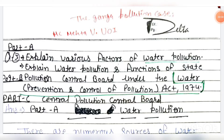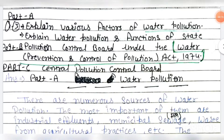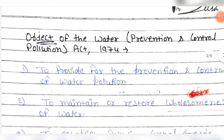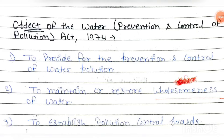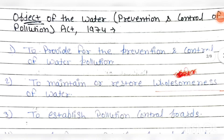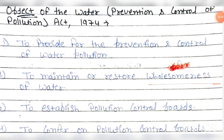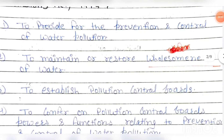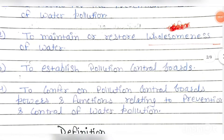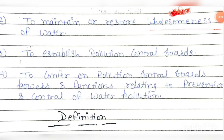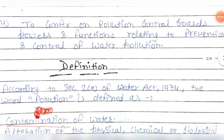Hello everyone, today we are discussing the Water Act 1974 as well as the Central and State Pollution Control Board under the Water Act. The objects of the Water Prevention and Control of Pollution Act 1974 are: to provide for the prevention and control of water pollution, to maintain and restore wholesomeness of water, to establish pollution control boards, and to confer on pollution control boards powers and functions relating to prevention and control of water pollution.